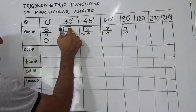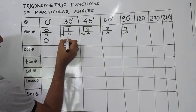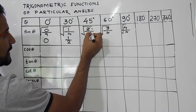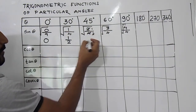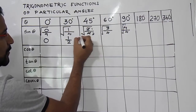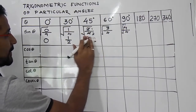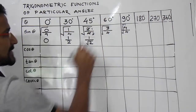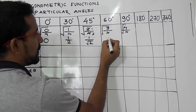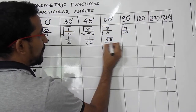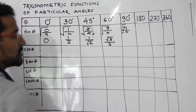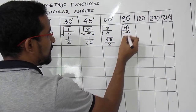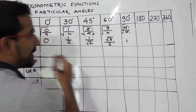The square root of 1 is 1 and the square root of 4 is 2, so it becomes 1/2. Then 2/4 gives square root of 1/2, which is 1/√2. For 3/4, since 3 is not a perfect square, it becomes √3/2. And 4/4 gives square root of 1, which is 1. So sine 90° is 1.